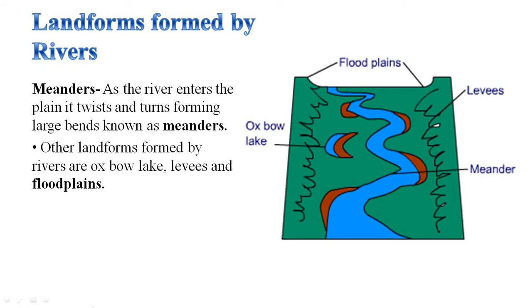Meander: as the river enters the plain, it twists and turns, forming large bends known as meanders. With time, the meander cuts off from the river and forms a cut-off lake called an Oxbow Lake. During monsoon and floods, rivers overflow their banks and deposit a layer of fine soil, which leads to the formation of flood plains.